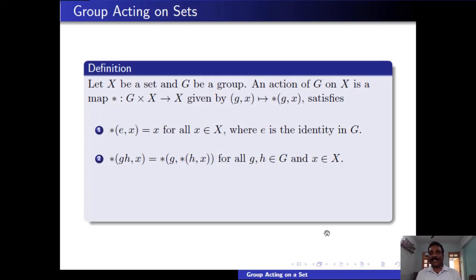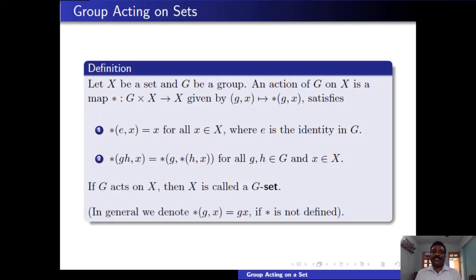The second property is that star(gh, x) = star(g, star(h, x)) for all g and h in G and x in X. If G acts on X, then X is called a G-set. As we know that if the group operation is not specified clearly, we always take the group operation as multiplication. Similarly, in the group action, if the star is not defined, we define star(g, x) as g times x, that is, by natural multiplication.